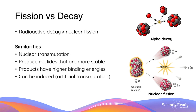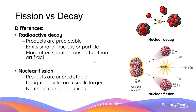While the two processes may seem very similar, radioactive decay and nuclear fission are actually not the same process. They are often confused together because they are both classified as nuclear transmutation. The two processes also produce nuclei that are more stable and have higher binding energies, and both processes can be induced — that is, they can both be classified as artificial transmutation.